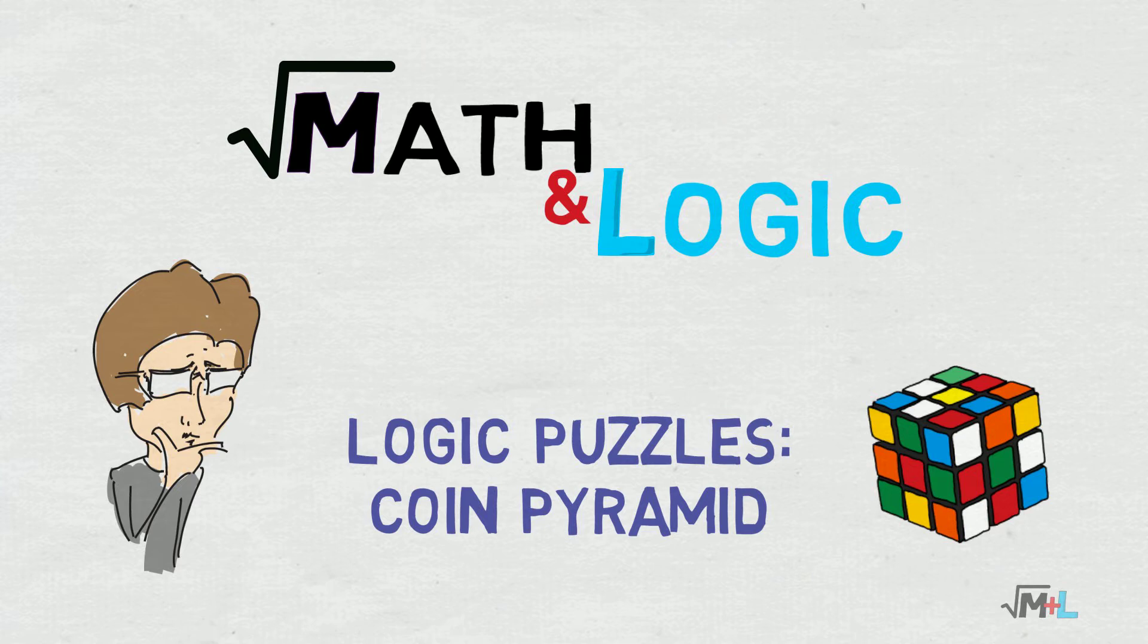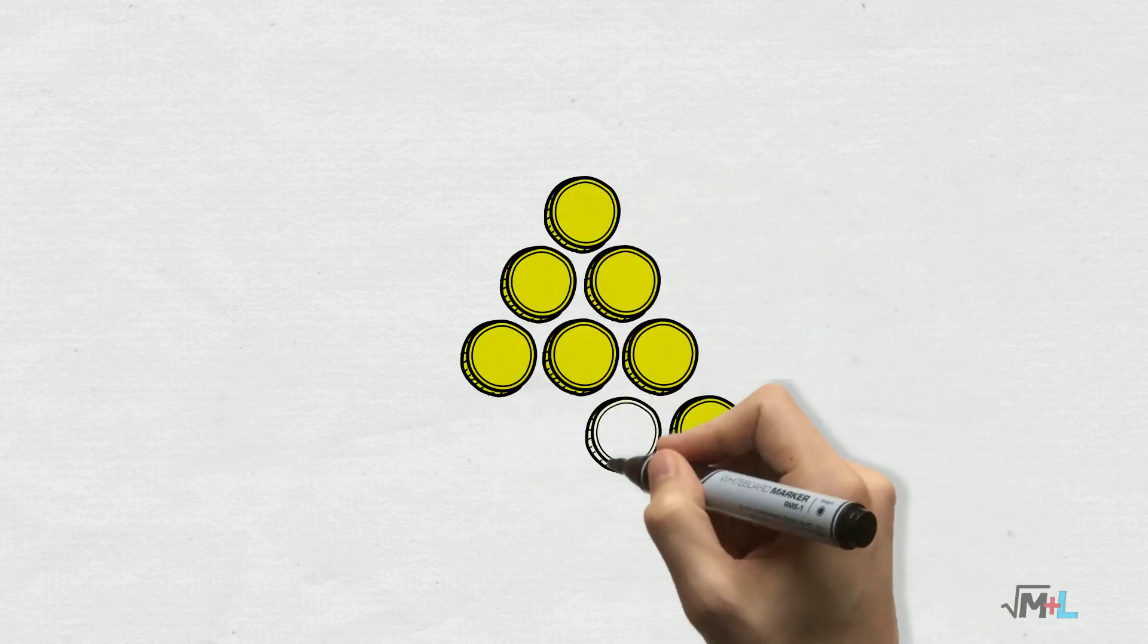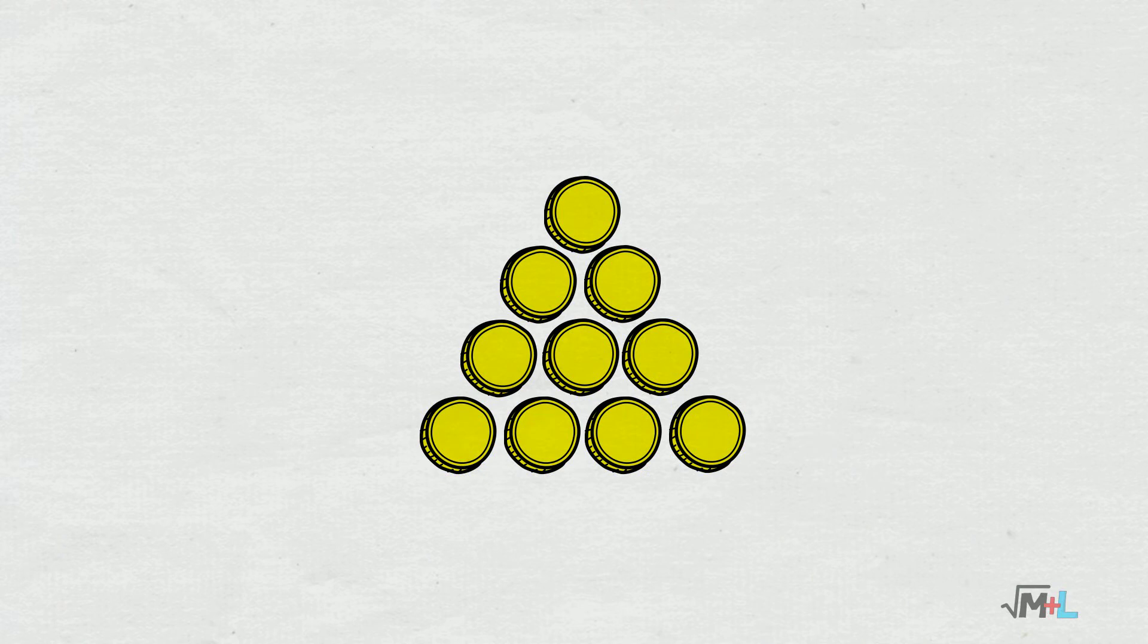The coin pyramid. It's quick, but the solution is not that obvious and I will also explain how to find it. So here is the puzzle. You have 10 coins lying flat on a table, arranged in the shape of a pyramid as you see here.